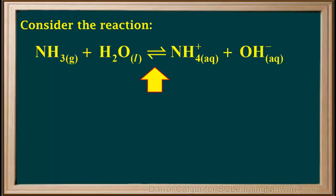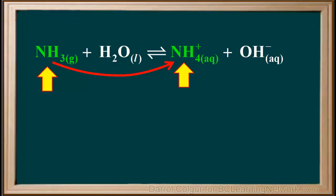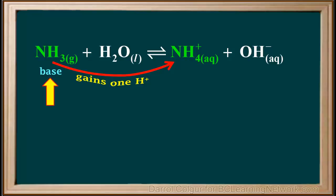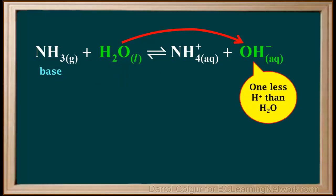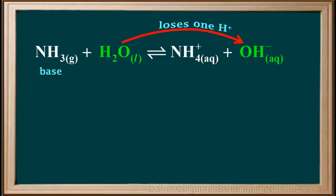Now consider this reaction with NH3 and water, where a double arrow indicates equilibrium. NH3 is converted to NH4+, gaining one H and one positive charge — it gains one H+, or proton. Because it gains a proton, NH3 is classified as a base. Water is converted to OH-. OH- has one less H+ than H2O, so H2O loses a proton and is identified as an acid in this case.